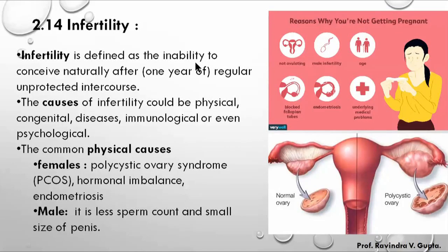The meaning of infertility: it is defined as an inability to conceive or give birth to a baby naturally after one year of regular unprotected intercourse. There are many types of protection and birth control measures. The condition of being unable to conceive is called infertility.